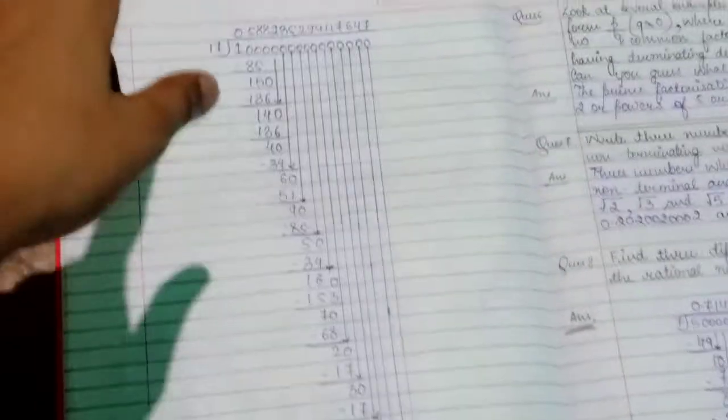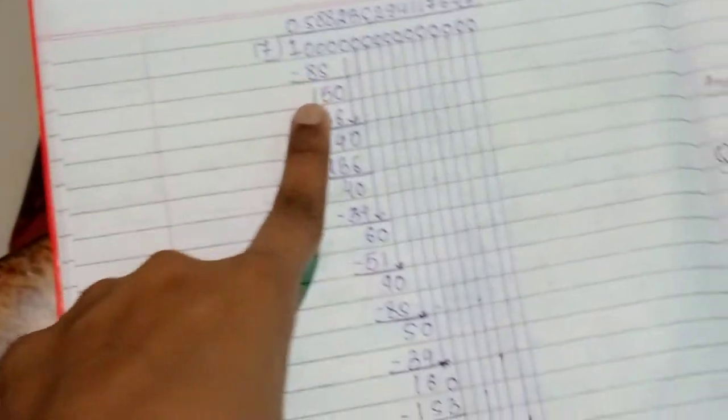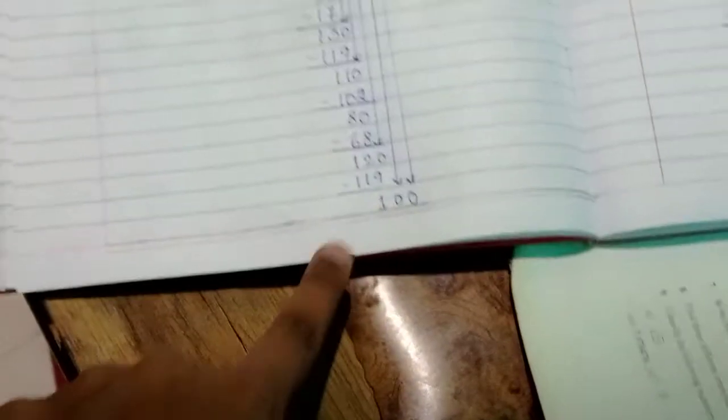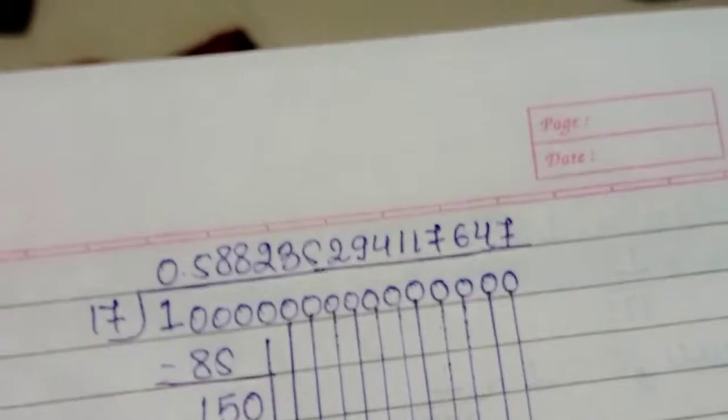So are you able to see this answer? I have done it like this. This was the long answer that I found, and my last remainder is 100. And this is my quotient. Now let's go back to my board.